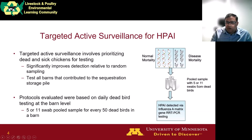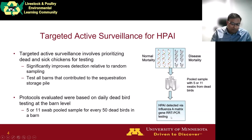A 5- or 11-swab pooled sample is taken from the daily mortality on a day, which can include the birds that died due to HPAI disease as well as birds that died due to other production causes. Once a pooled sample is taken, it is tested through influenza A matrix gene RRT-PCR test.